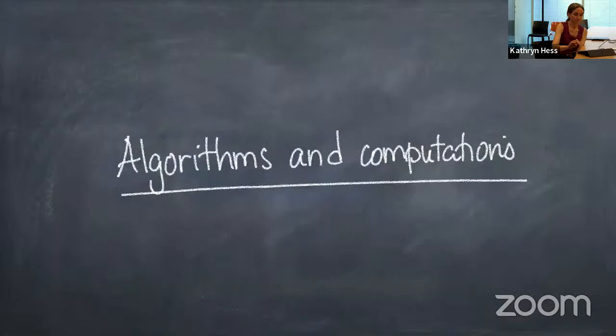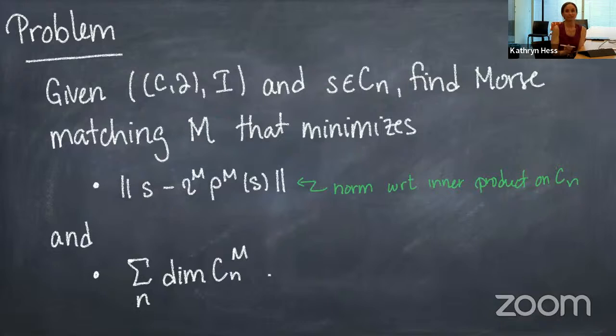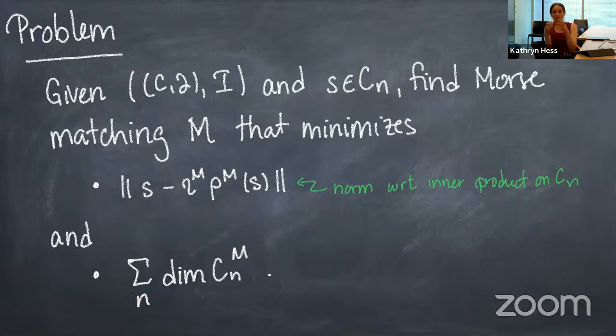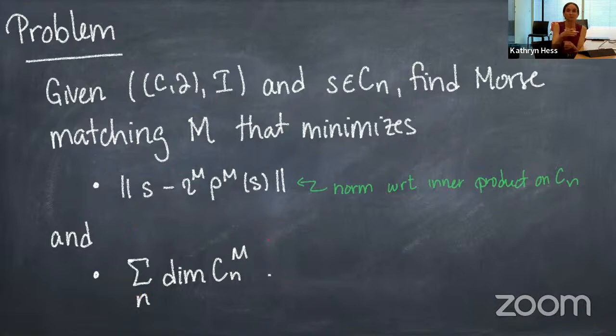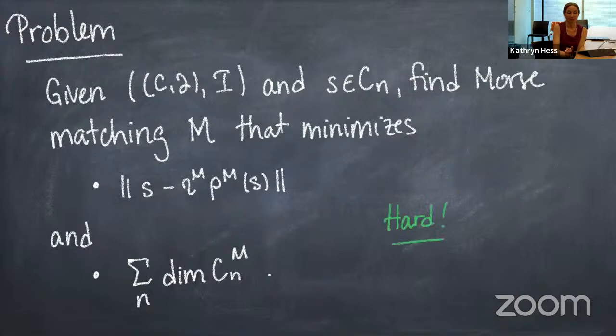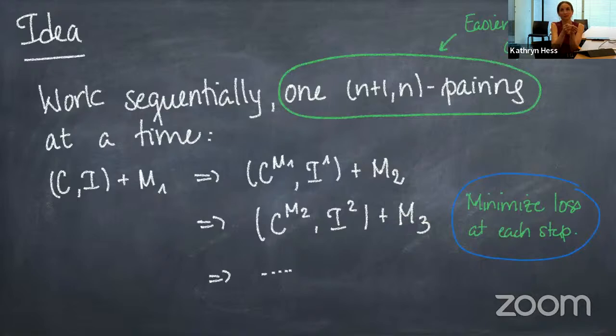For the actual algorithm: given a signal — an n-chain — the problem is to choose a matching that minimizes the reconstruction loss while also minimizing the total dimension of the chain complex for compression. In general this is a very hard problem — potentially NP-complete. Their idea was to work sequentially, doing a number of steps, each doing one n+1, n pairing in a way that minimizes the loss at each step, then chaining them together. You can apply the retraction to a signal, include it back, look at where the reconstruction error is, and project onto the Hodge basis.